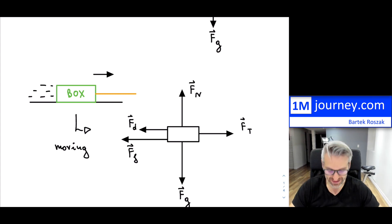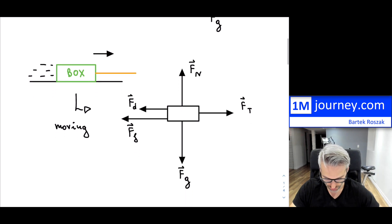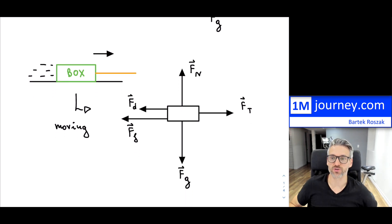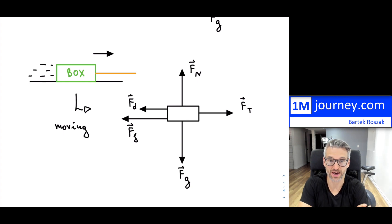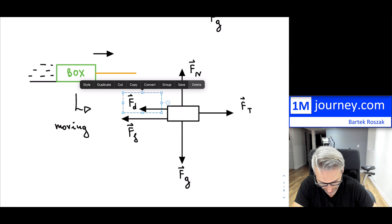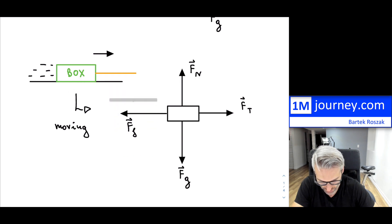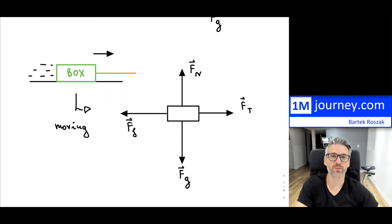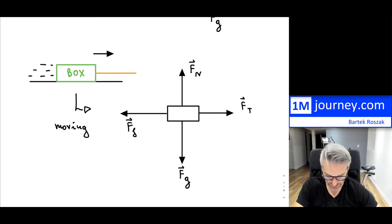That's how your free body diagram would look for the moving box. If you do neglect the air resistance or drag and remove it, this is the more common free body diagram you will see, especially in introductory physics. So that's another example.